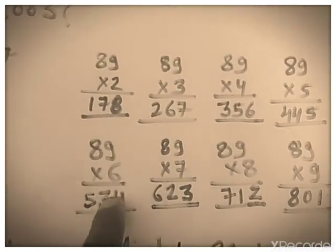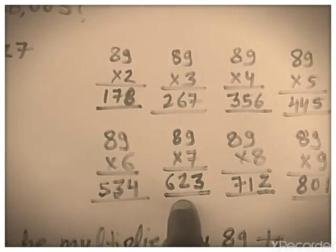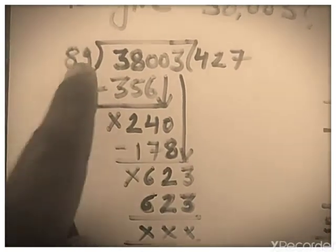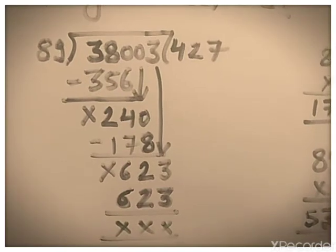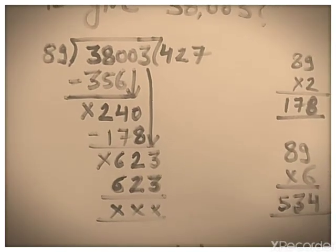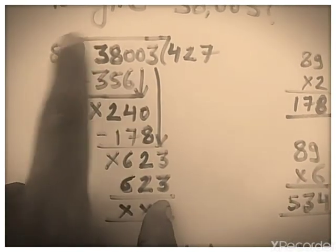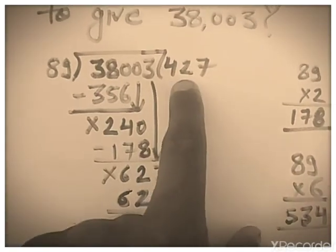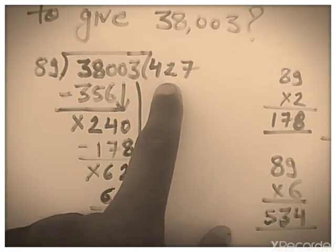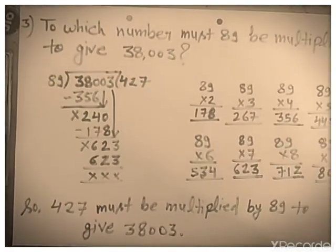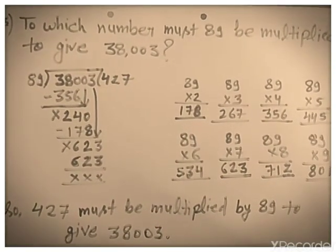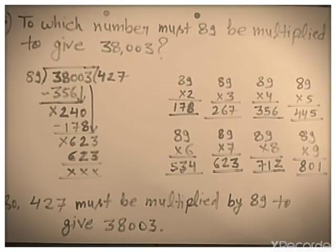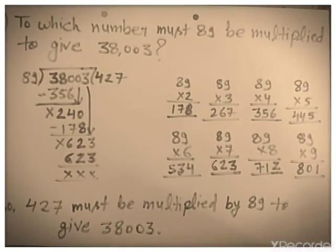89 × 6 is 534 and 89 × 7 is 623 — so take 7. 89 × 7 is 623. When we divide 38,003 by 89 we get 427 as the quotient. So the answer is: when we multiply 427 by 89, we get 38,003.